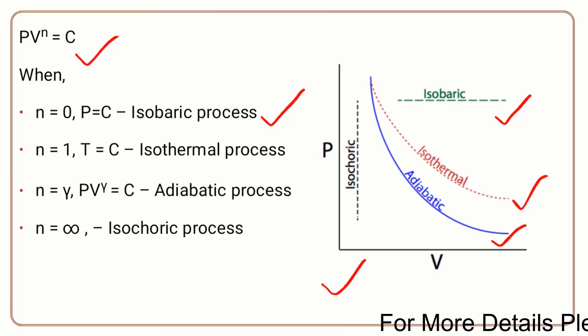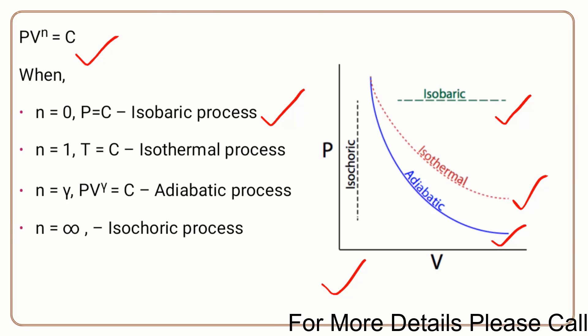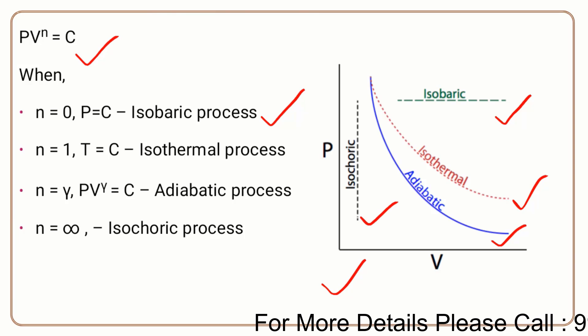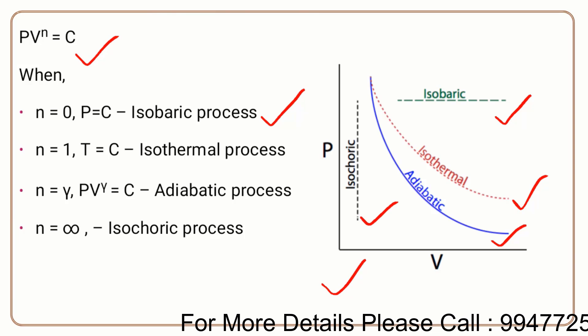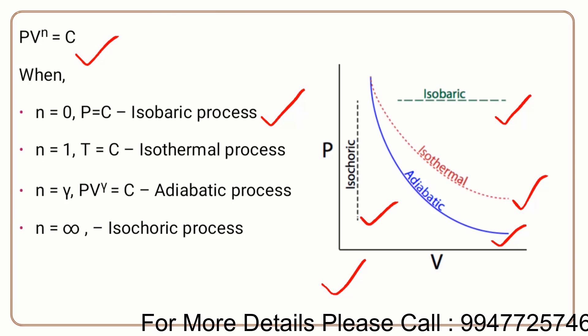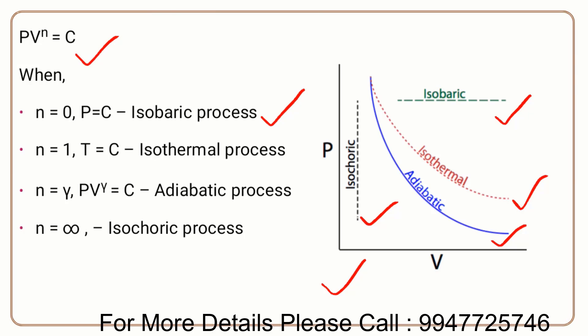If n is equal to infinity in the polytropic equation, that process is the isochoric process — that is, the constant volume process. So the answer is option A: constant volume.